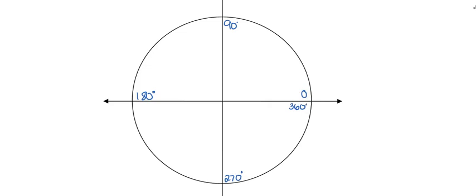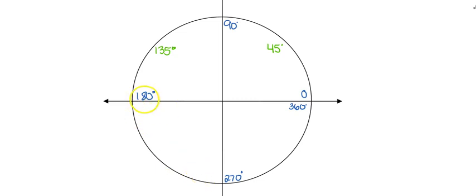We can break it down in more detail using special right triangles from geometry. We can go halfway between 0 and 90, which is 45 degrees. So: 0, 45, 90. Halfway between 90 and 180 is 135. Add 45 to get 180. Halfway between 180 and 270 is 225. Halfway between 270 and 360: add 45 to 270 gives you 315 degrees.